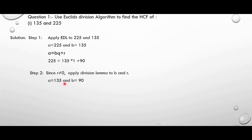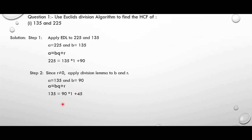Now a becomes 135 and b becomes 90. Again apply the formula a equal to bq plus r. On substituting the values we get 135 equal to 90 into 1 plus 45. If you have any doubt, divide 135 by 90 to get quotient as 1 and remainder as 45. Again we don't have r equal to 0, so we need to again apply Euclid's division lemma to 90 and 45, that is b and r.